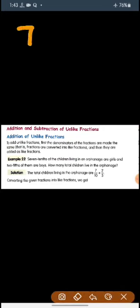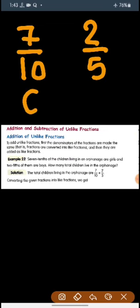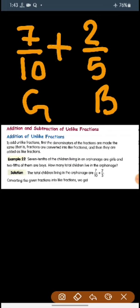7 tenths means 7 by 10. Seven tenths of the children living in an orphanage are girls, so 7 by 10 are girls. And 2 fifths, that is 2 by 5, are boys. How many total children live in the orphanage? Total means we have to add them.